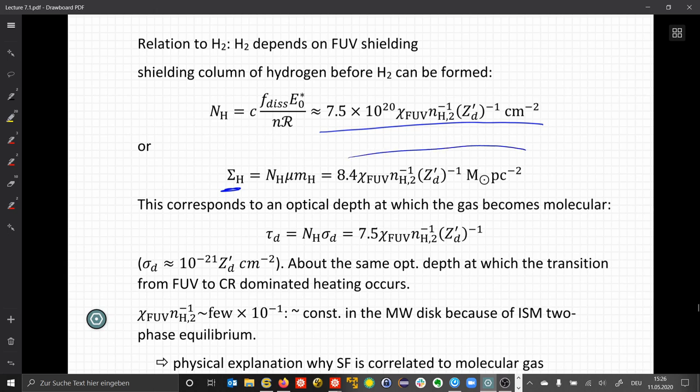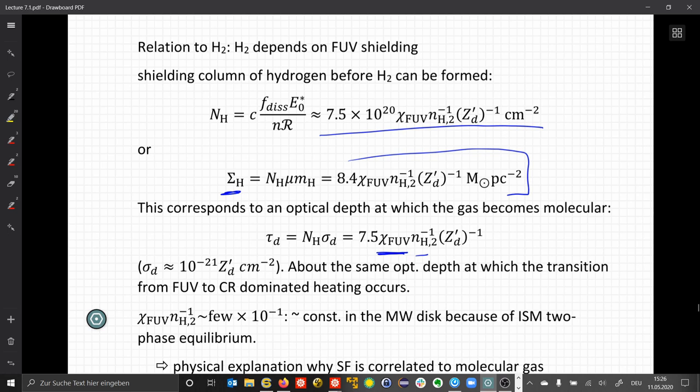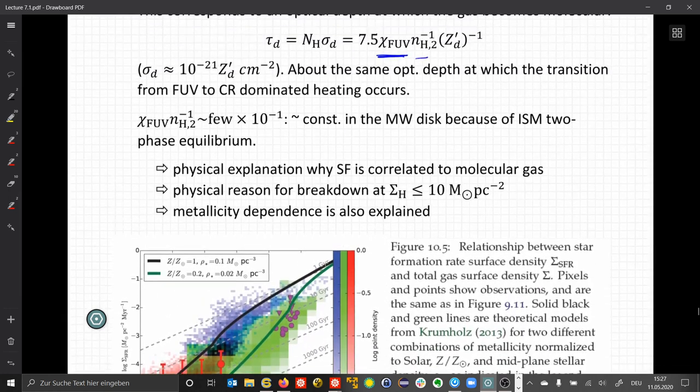We can convert this also in our surface quantities. And then find here this quantity. We can correspond this to an optical depth at which the gas becomes molecular, at which the transition from the atomic to molecular hydrogen takes place. This is a function of the intensity of the UV field, the densities and the metallicities. Higher density reduces the optical depth at which this takes place. So the transition is closer to the surface of the cloud. When the gas is dense, higher UV fluxes push the transition further in. And roughly, this is about the same optical depth at which the transition from UV to cosmic rays dominated heating occurs.